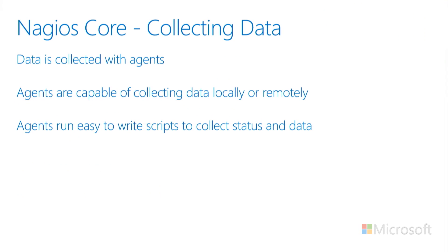Data is collected with agents that need to be installed on machines. The agents are capable of collecting data either locally or remotely, and they run easy-to-write scripts to collect status and data — you can write your own scripts to collect data. There is also an Azure integration: you can send Nagios alerts to the Operations Management Suite, and there are multiple plugins available on the Nagios store that you can use to monitor Azure resources.